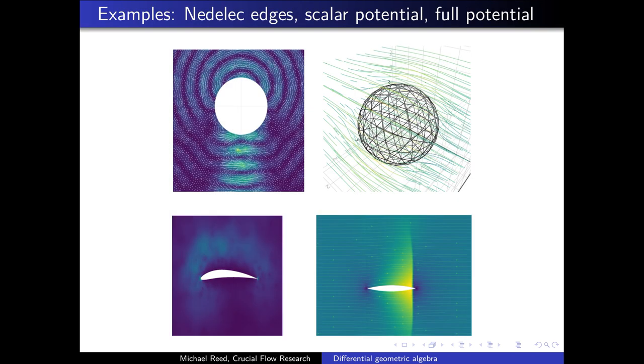Here we have a few examples of finite element calculations visualized with Makie in the Julia language using the Grassmann algebra. The electromagnetic wave scattering was interpolated from Nédélec edges. The scalar and the full potential calculations were done on meshes of different dimensions. Due to the Grassmann algebra foundation, we can easily generalize the problems for one dimensional or two dimensional or higher dimensional using Grassmann as a foundation.